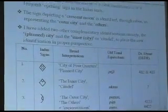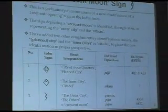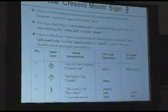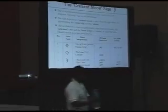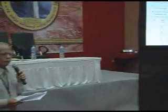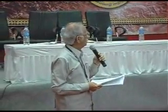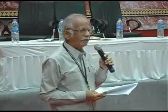The city of four quarters is identified as Pali. Please note the title: Broad Interpretation. It is not proto-Dravidian reconstruction. It is not phonetic decipherment. It is an ideographic interpretation. Number one is the city of four quarters — the planned city. Number two is the inner city, the citadel, the power center of the Indus civilization. The city of four quarters is Pali; the inner city is Aham; the outer city is Puram, and people who live there are Puram. The first two signs are interpreted ideographically, and the third sign by the technique of rebus.